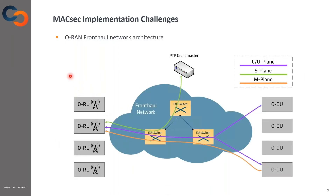The second implementation challenge is with regards to traffic differentiation in the fronthaul network. The ORAN fronthaul can vary from a point-to-point scenario to a network of switches as illustrated in the figure. A radio unit on a single port may need to transport the control, user, and synchronization planes independently to different locations — for example, the S-plane between the radio unit and PTP grandmaster, and the control/user plane between the radio unit and multiple distributed units. Therefore, there is a need to have multiple security domains based on traffic type targeting multiple destinations. If MagSec is used, a single port needs to support multiple connectivity associations for traffic differentiation.